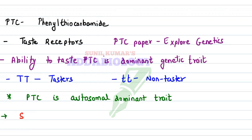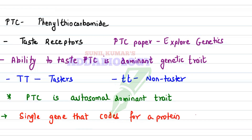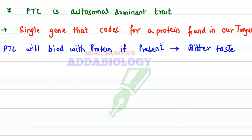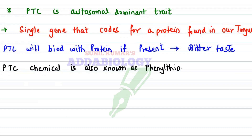For phenyl thiocarbamide, there is a single gene present in the tongue that codes for a protein. PTC will bind to this protein, and if PTC binds to the protein then we get a bitter taste — it means you are a PTC taster. If you don't get a bitter taste, it means the protein has not bound to the PTC, meaning you are a non-PTC taster. PTC chemical is also known as phenyl thiourea.